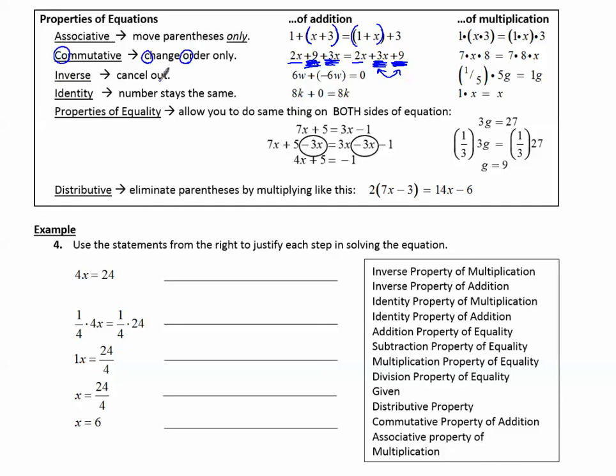Inverse is when things cancel out, like a 6w and a negative 6w, or a 1 fifth times a 5. Identity, the number stays the same, so adding 0 keeps its identity, multiplying by 1 keeps its identity. Properties of equality is when we do the same thing on both sides of an equation. Like subtracting on both sides of the equation is the subtraction property of equality. The distributive property is eliminating the parentheses by multiplying. Like this, 2 times 7x is 14x, and 2 times negative 3 is negative 6.